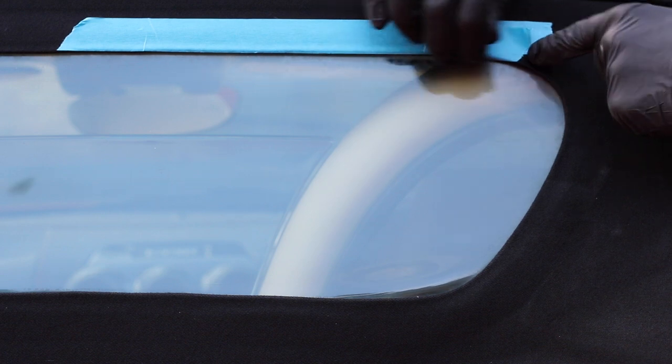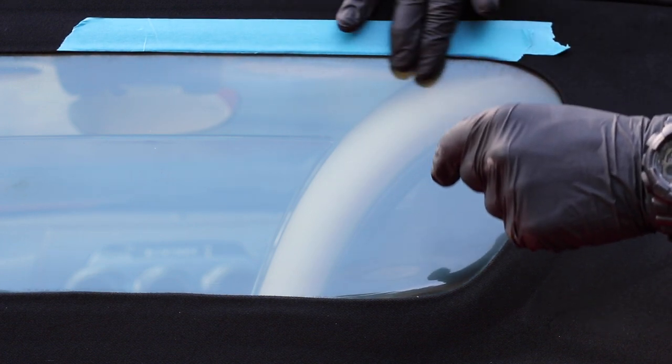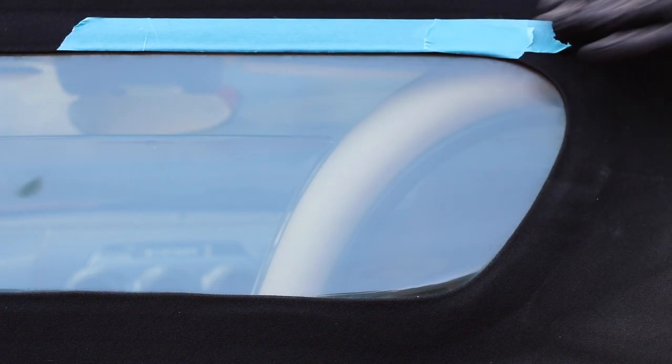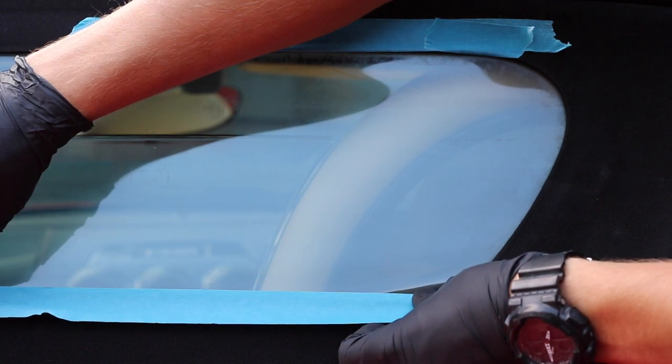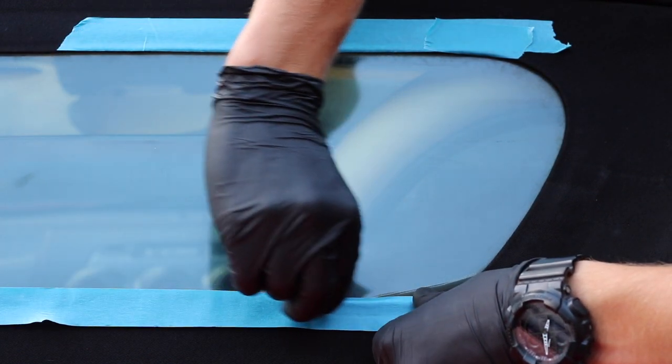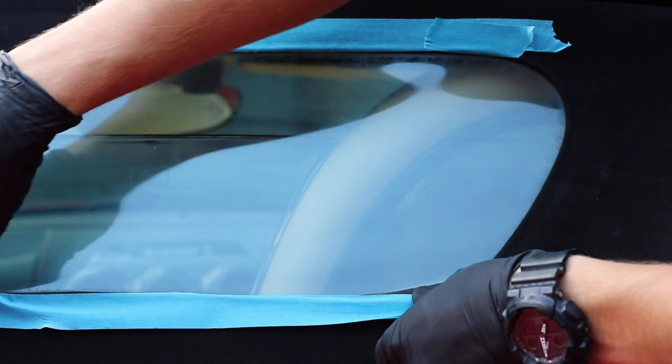So grab some 3M blue tape that you'd often use when you do your paint correction details or other areas of detailing and just tape up around the lip edge of your fabric hood on your car. This will ensure that any runoff doesn't get soaked up by the fabric in the hood.